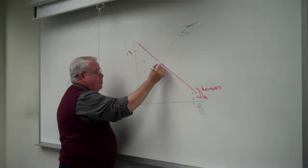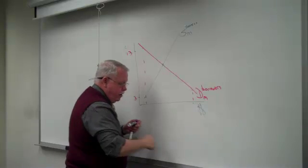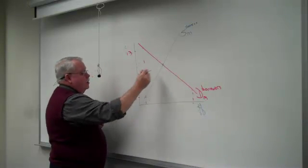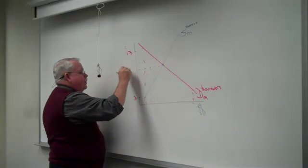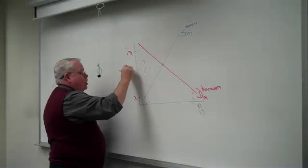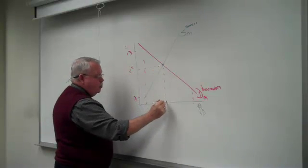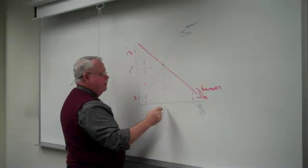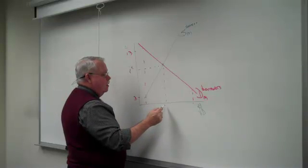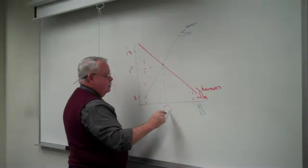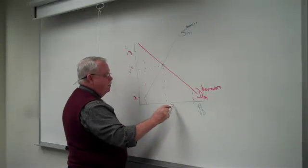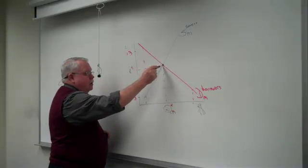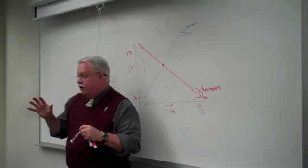And between the two of them, their interaction creates — at least in theory — an equilibrium interest rate and an equilibrium level of borrowing and lending. We call this Q star of money. Conceptually, that's the loanable funds market.